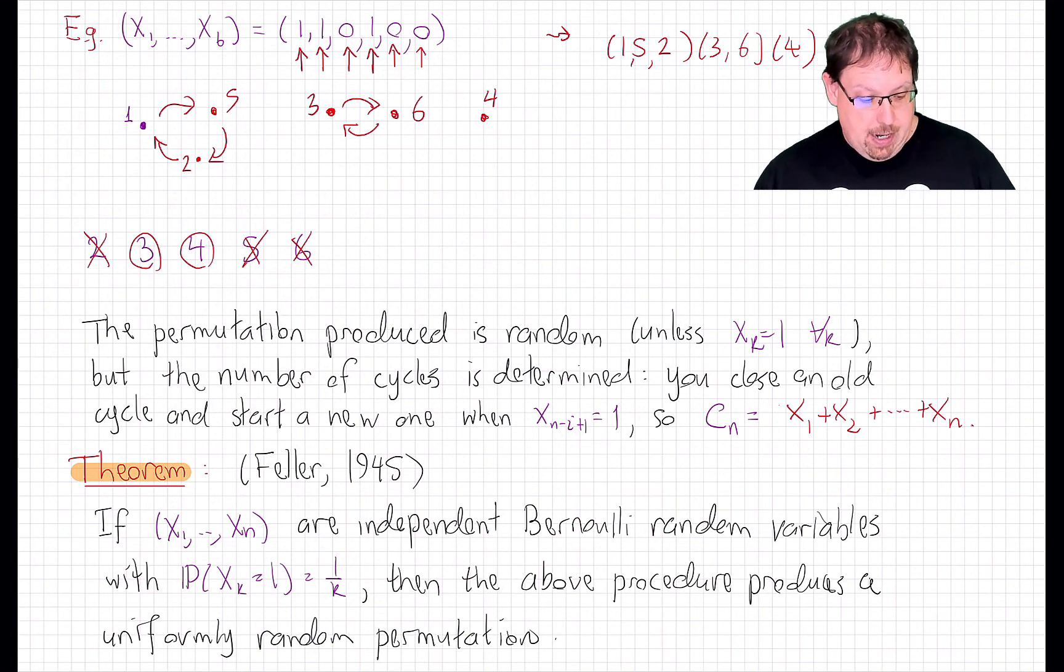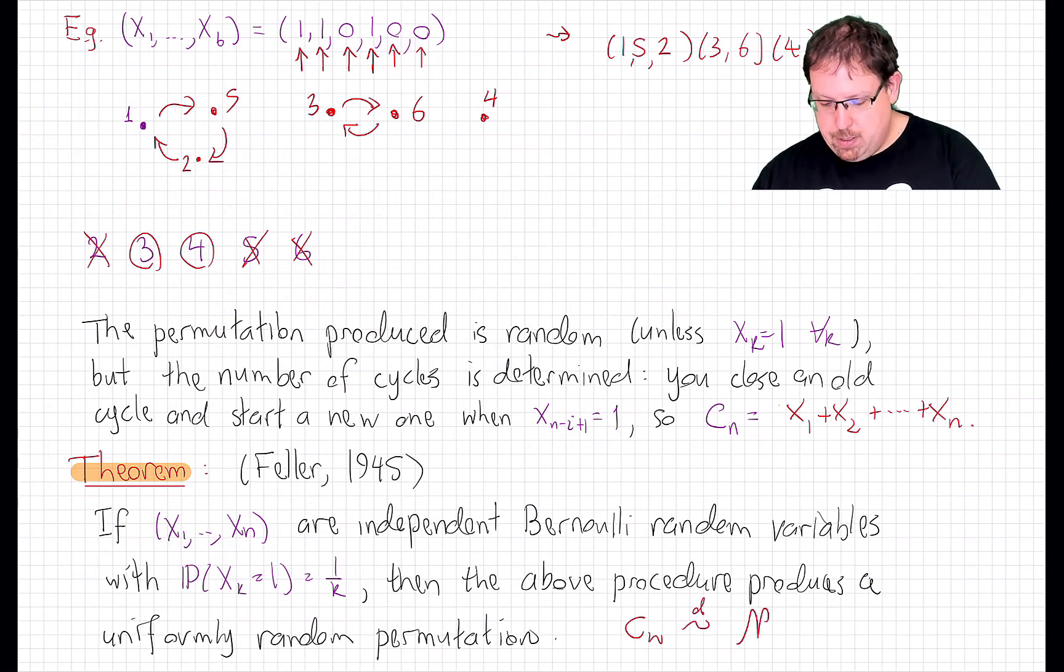The upshot here is that our application of the Lindberg central limit theorem now shows that this permutation statistic, the number of cycles in a uniformly randomly selected permutation, is, as n grows in distribution, approximately normal, with mean log n and variance log n.